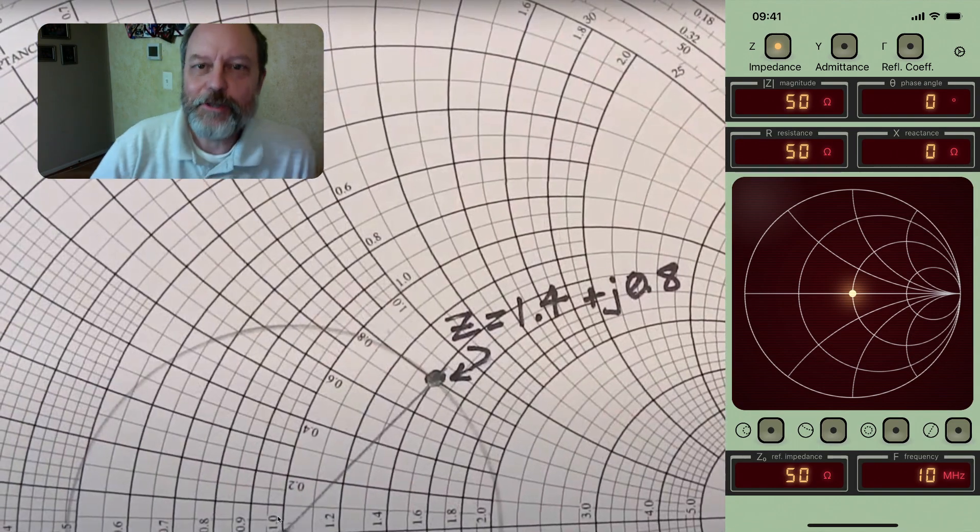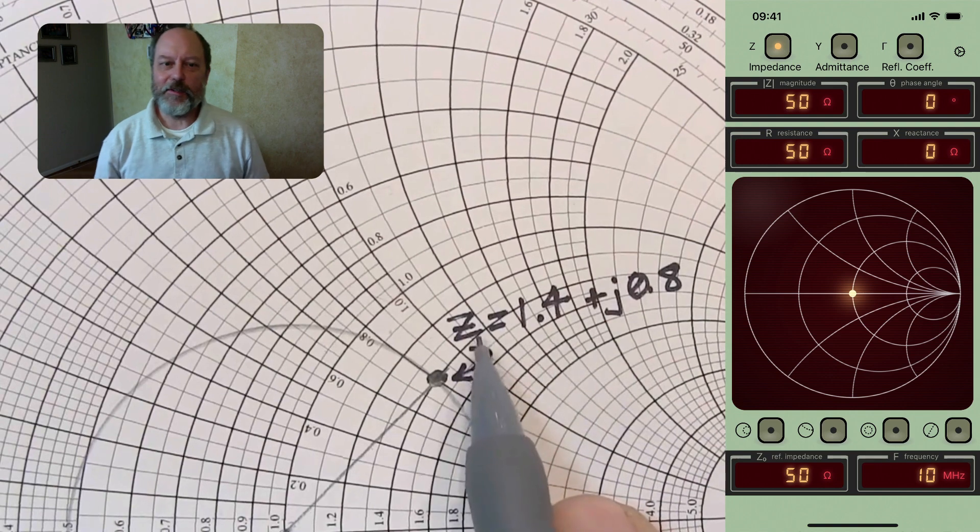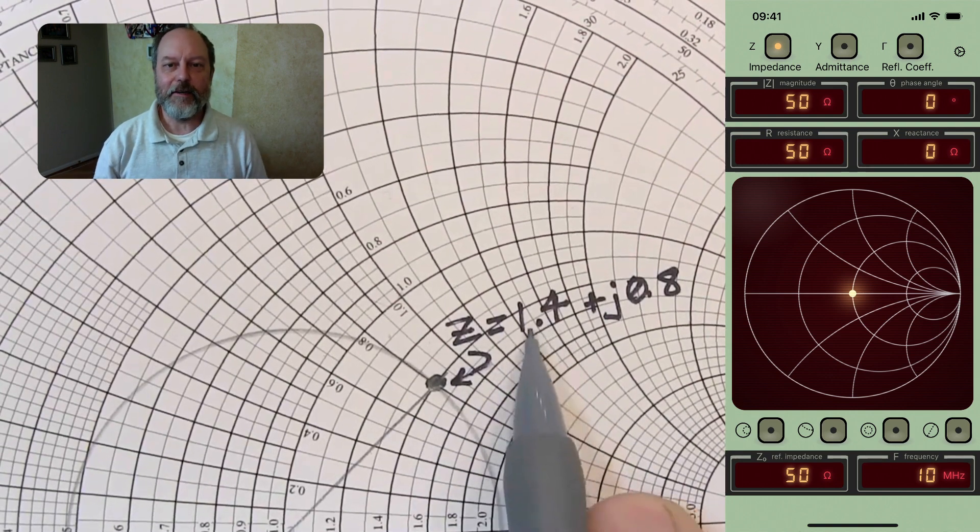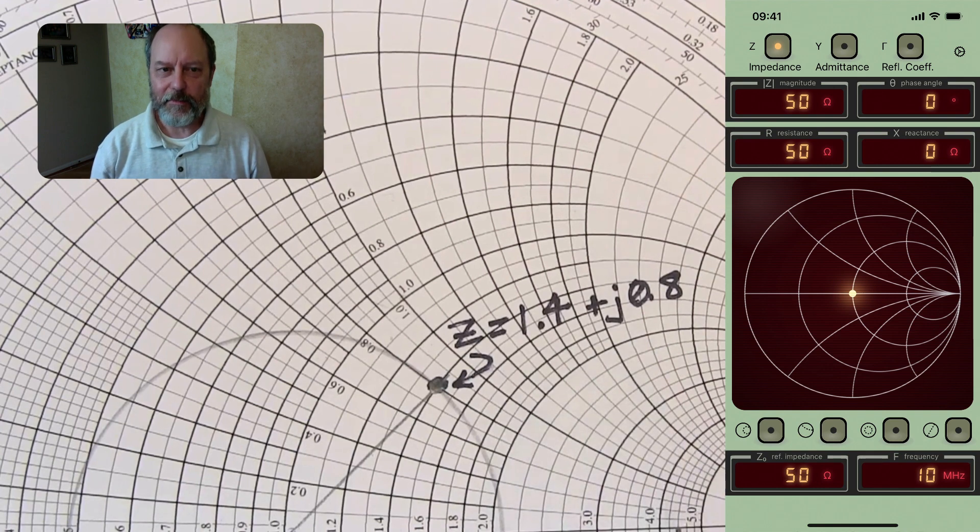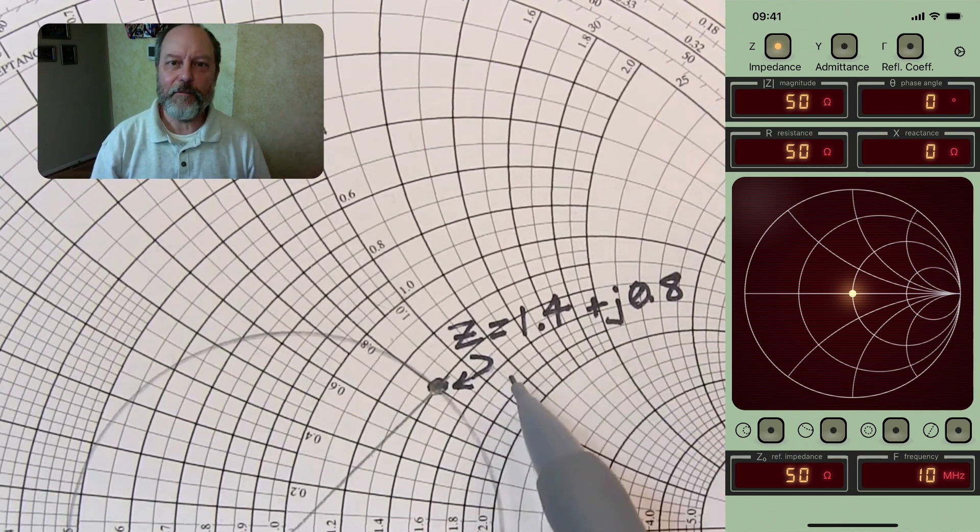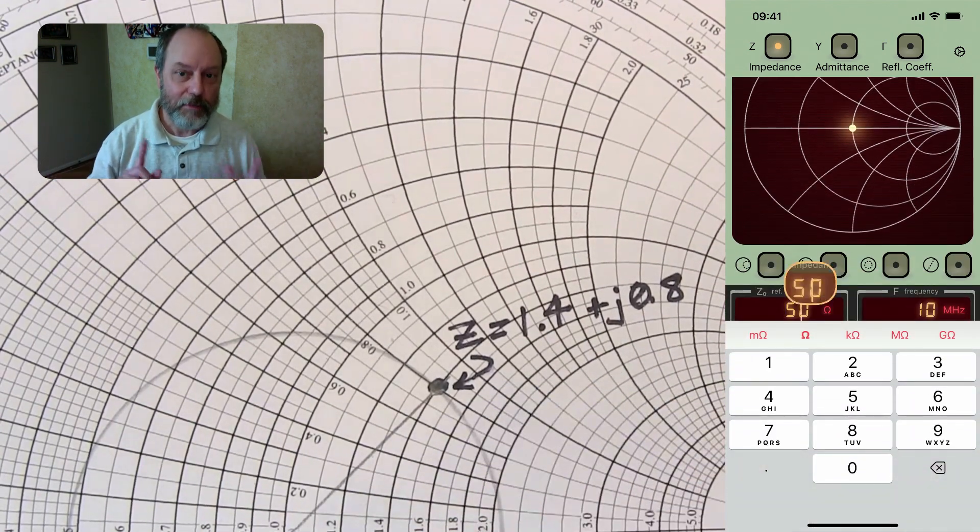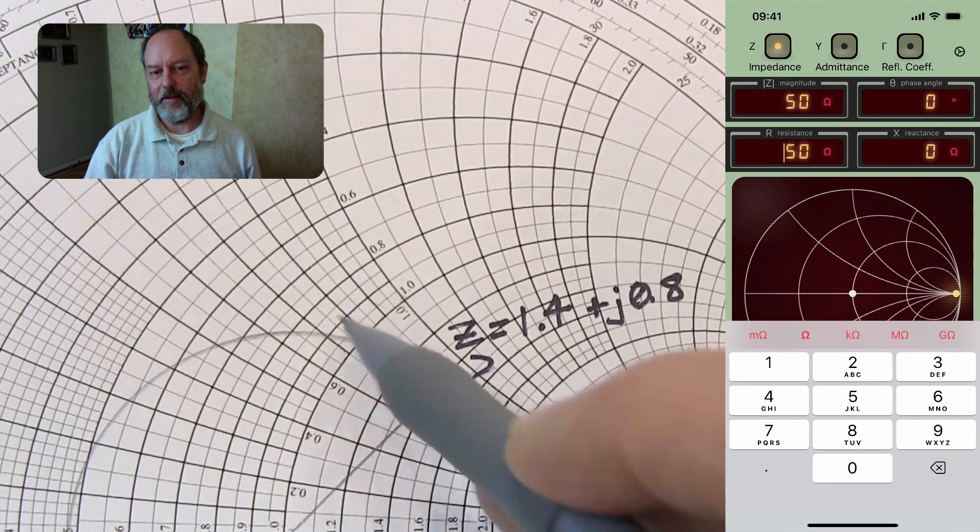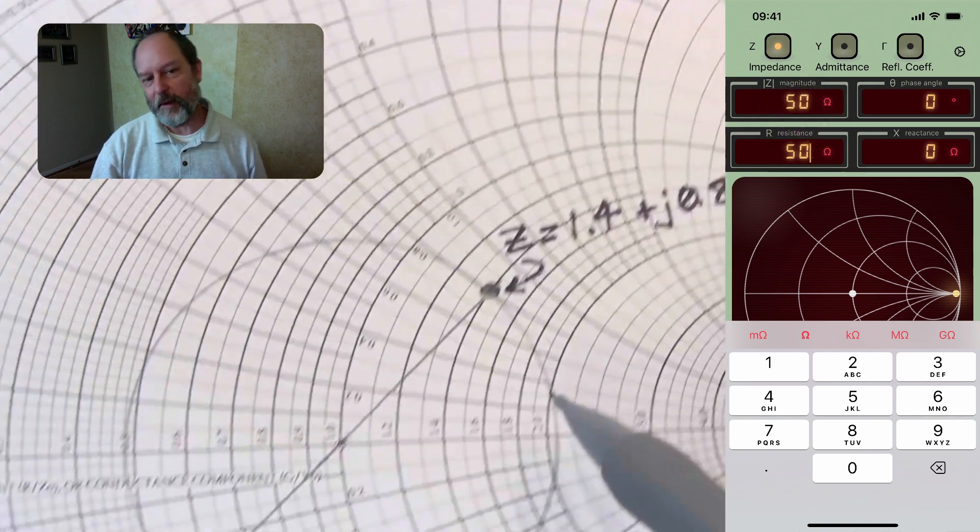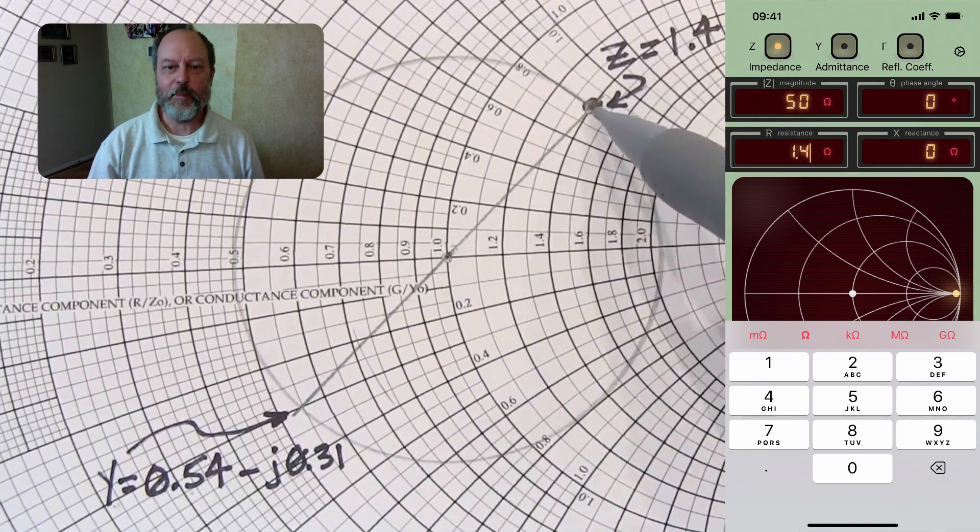So next, Alan shows a nifty graphical trick with a Smith chart to convert to admittance. So we're going to be working in terms of normalized impedance. So to make this easy, let's first just set the reference impedance in the app to be one ohm. Now with that set, let's enter the value that Alan's going to convert 1.4 plus 0.8j as the impedance point.